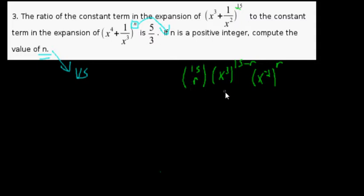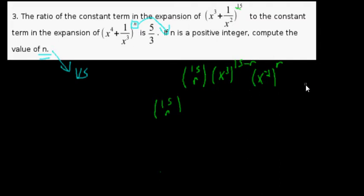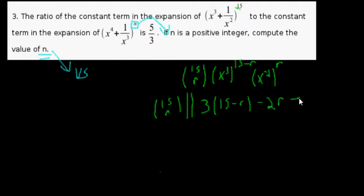So when all this multiplies together to x to the zero, it's going to be constant and equal to one, so what we're looking for is fifteen choose r. We get that when these exponents multiply together to equal zero. Since r is the only variable here, we can use exponent laws: multiply all the exponents together and set it equal to zero to solve for r. So that gives us three times fifteen minus r, plus minus two r.